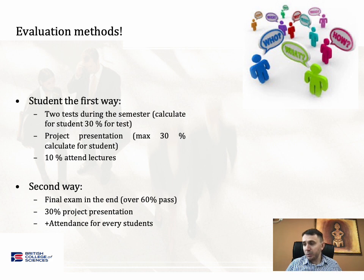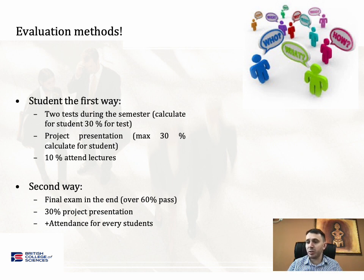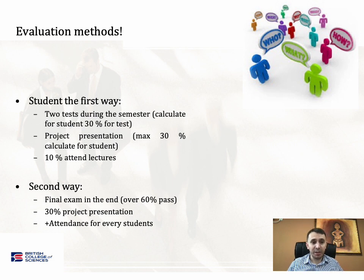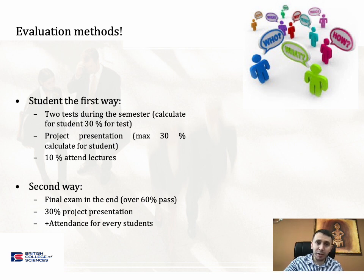You will have two ways to pass the exam. We will organize two tests during the semester, each calculated at 30 percent. The second value is 30 percent maximum points from the project presentation that you will prepare during the weeks. The project presentation you can do by yourself. You will also get 10 percent from attendance. Alternatively, if you don't want to take the two tests, you can come to the final exam, but you need to pass over 60 percent. Project presentation is obligatory and attendance adds value for a higher grade.